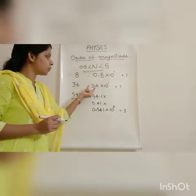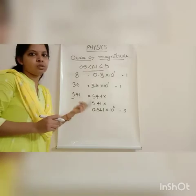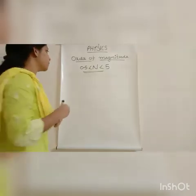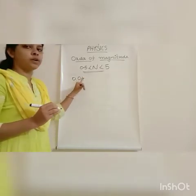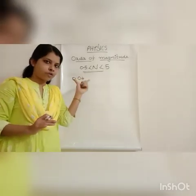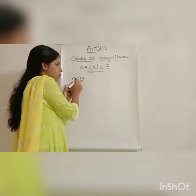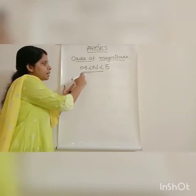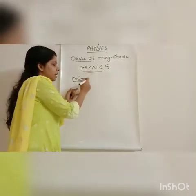The condition to find the order of magnitude is that the magnitude should lie between 0.5 and 5. Now consider another example — the number 0.04. We have to find the order of magnitude of this number. The magnitude 0.04 is less than 0.5, so we have to increase the magnitude.